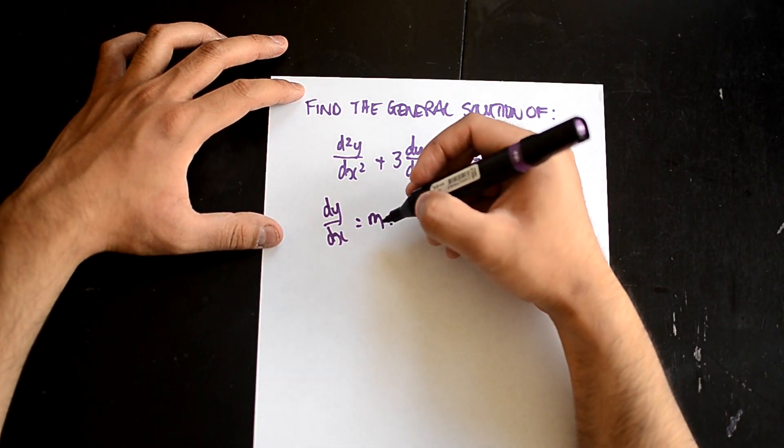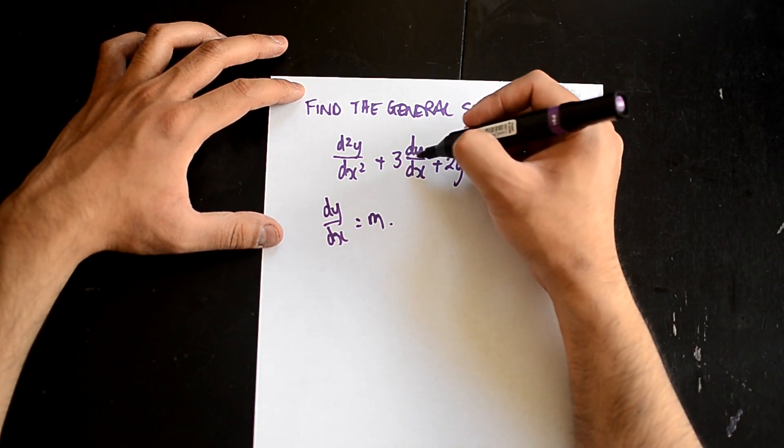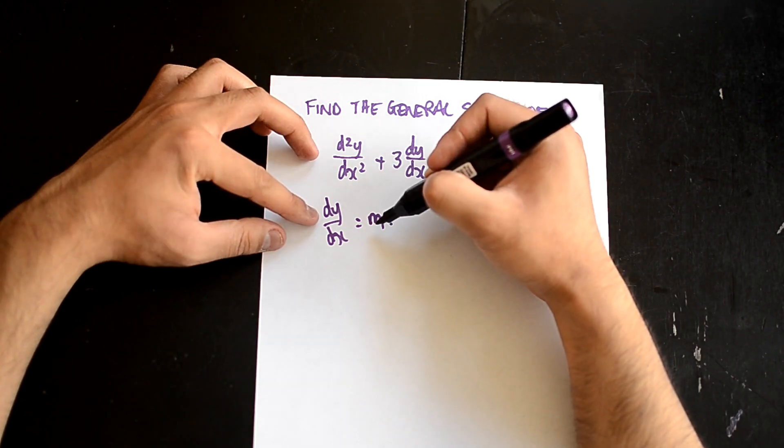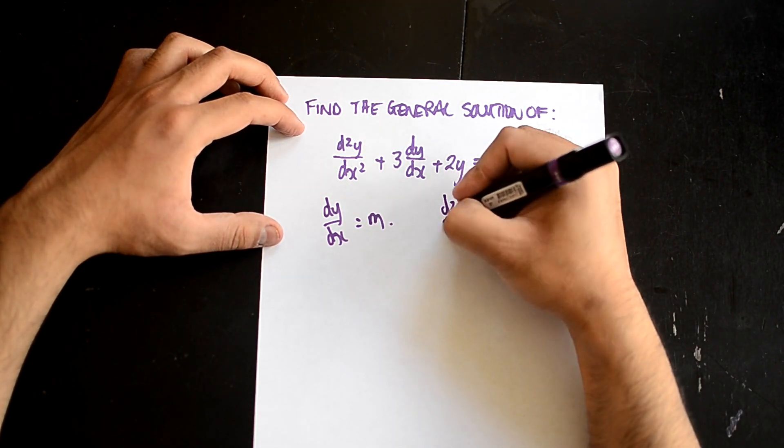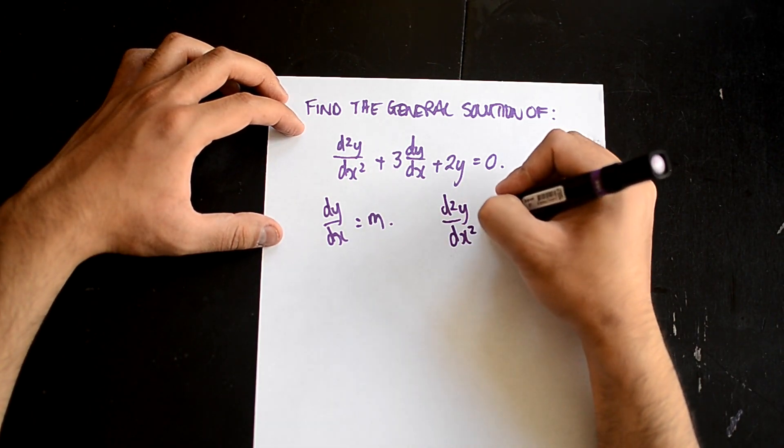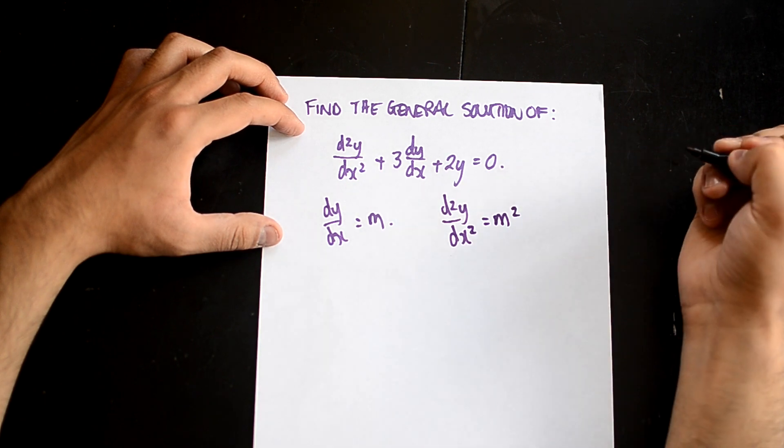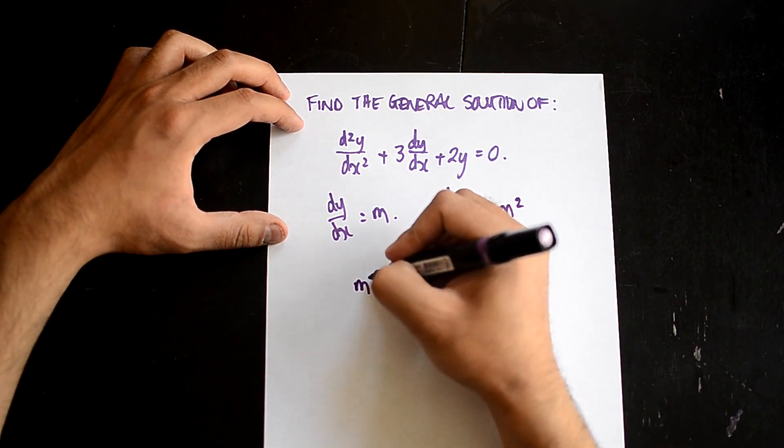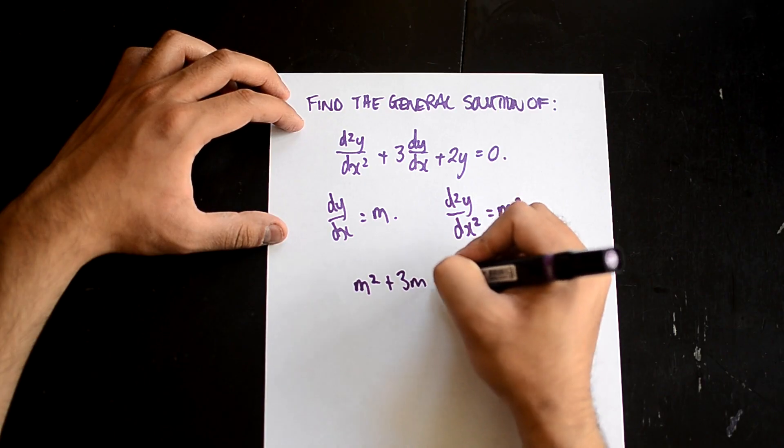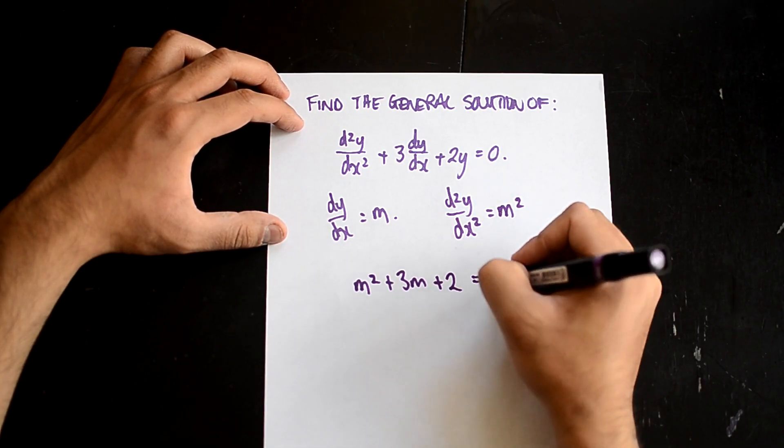We know that dy/dx can turn into m, and d²y/dx² is just simply m squared. So we should get m² + 3m + 2 = 0.